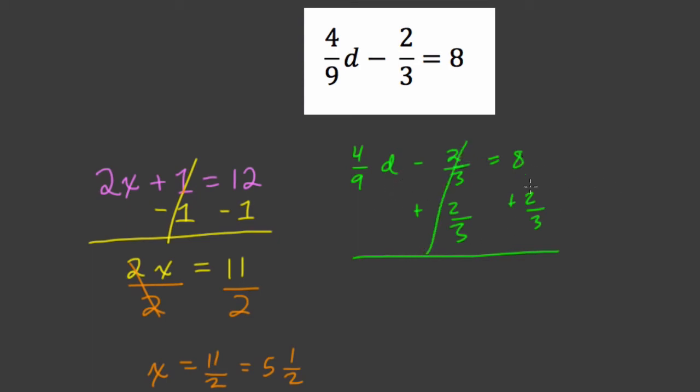Two opposites add to 0. So 8 plus 2 thirds is 8 and 2 thirds. So we have 4 ninths d equals 8 and 2 thirds. What I would do with my personal preference at this point is to turn any mixed number into an improper fraction.